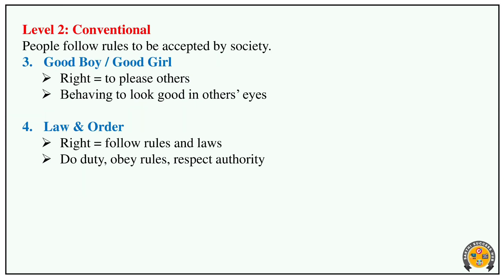The second level is Conventional morality. Here, individuals follow social rules to gain acceptance. The first stage is Good Boy/Good Girl orientation — we behave to gain approval from others. The second stage is Law and Order orientation — we follow the rules of society.